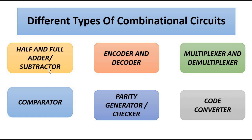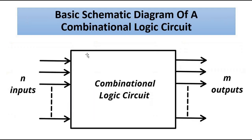The basic block diagram of a combinational logic circuit has inputs on one side. Depending on the requirement, there can be as many inputs as the circuit requires, and as many outputs as per the circuit's requirement. The internal circuitry consists of various logic gates — AND, OR, NOT, universal gates NAND and NOR, and also XOR and XNOR — in different combinations, giving n inputs and m outputs.